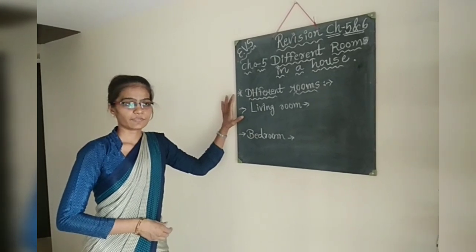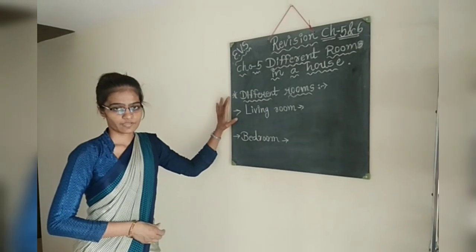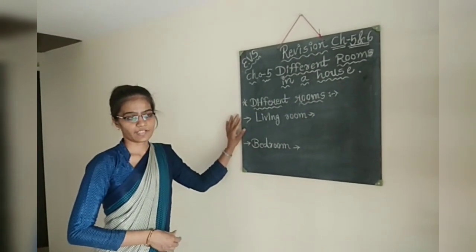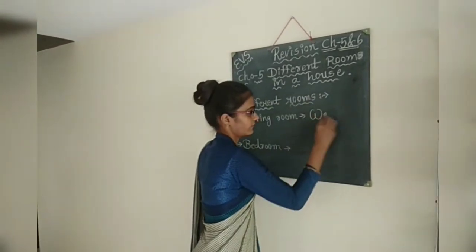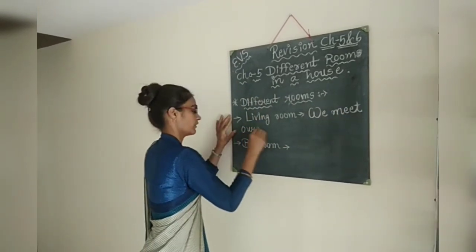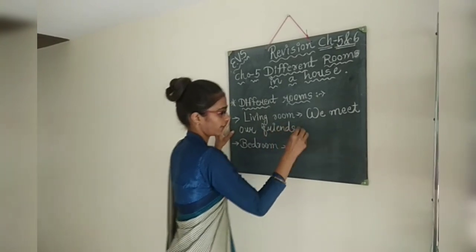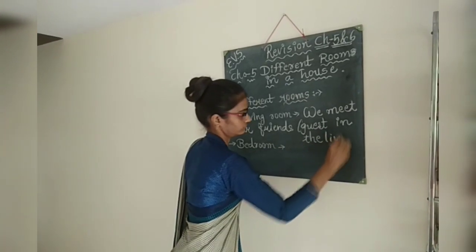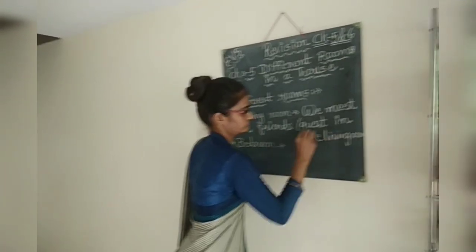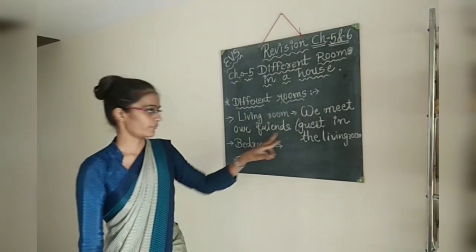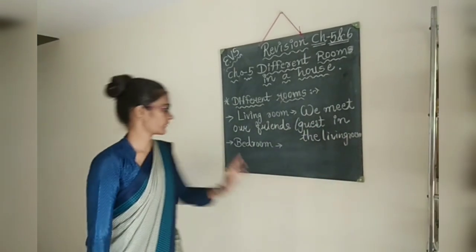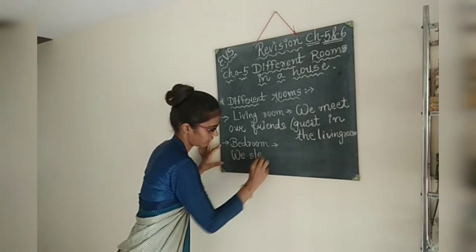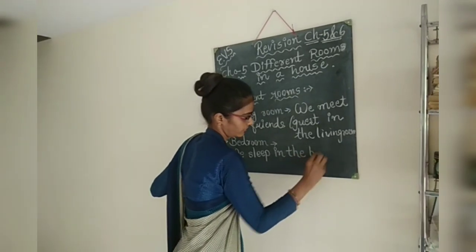As explained in the previous video, what do we do in these particular rooms? In the Living Room, we meet our friends and guests. Number 2, Bedroom — we sleep in the Bedroom.